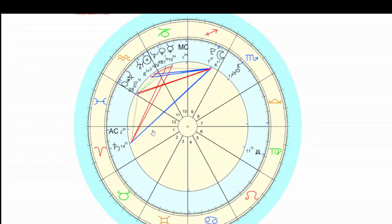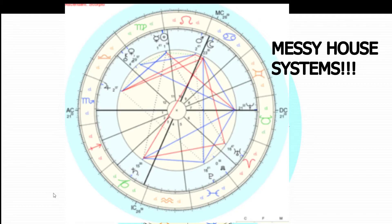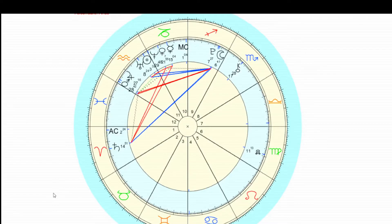We're also going to learn the house system. The house divides the wheel again into 12 segments. In the whole sign house system, this is really simple because the first sign is the first house, the second sign is the second house, the third sign is the third house, the fourth sign is the fourth house, and so on. You can see it's a nice, even, clean division. There are other house systems that make it a lot more complicated — some people will have really big first houses and really tiny eighth houses. For reasons I'll go into later, I prefer the whole sign house system. It's the oldest, it's the most tried and true, and it's the most simple.